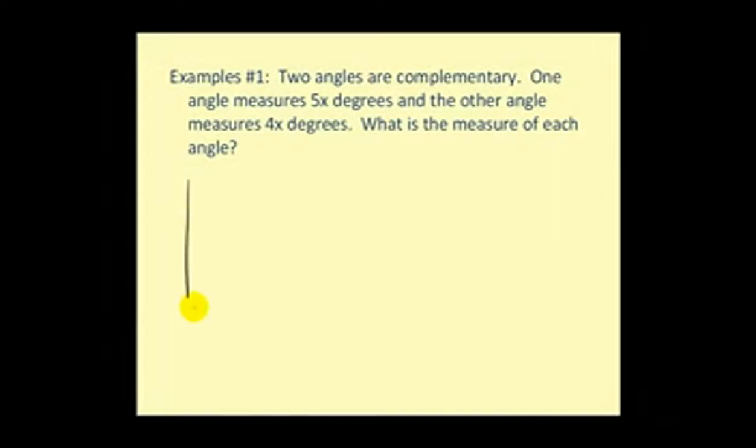So we start with a right angle. We can divide it into two different angles where one angle is equal to 5x degrees and the other is equal to 4x degrees.